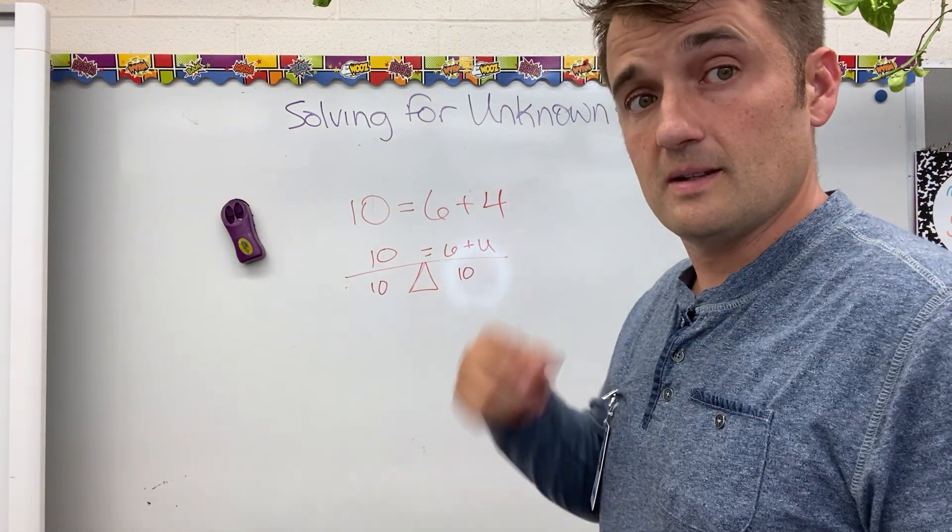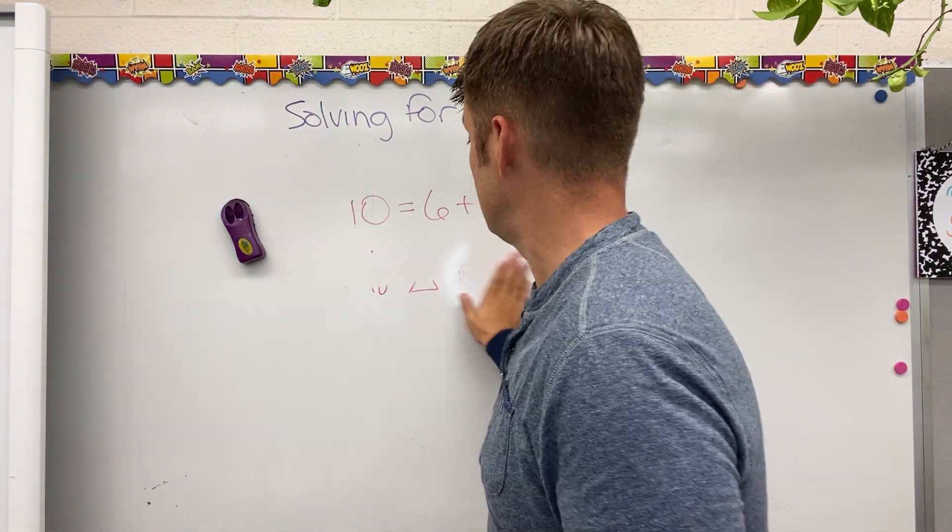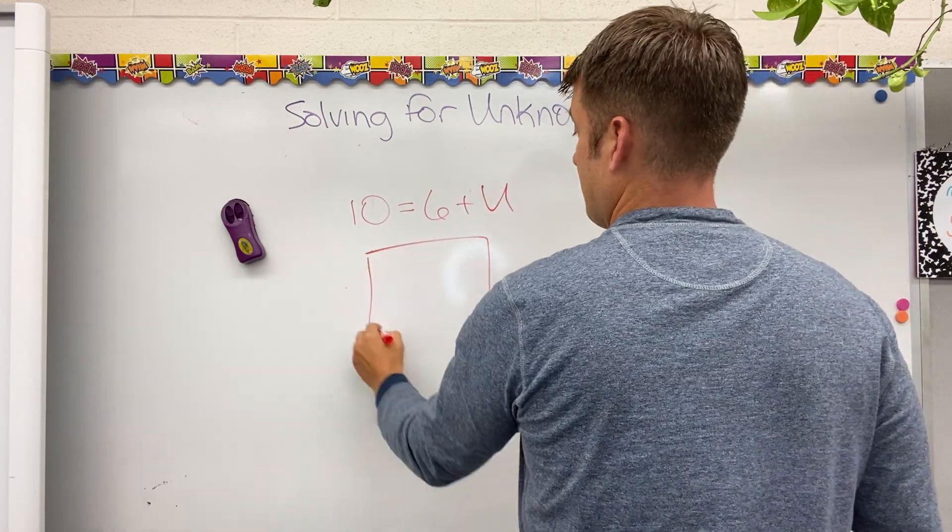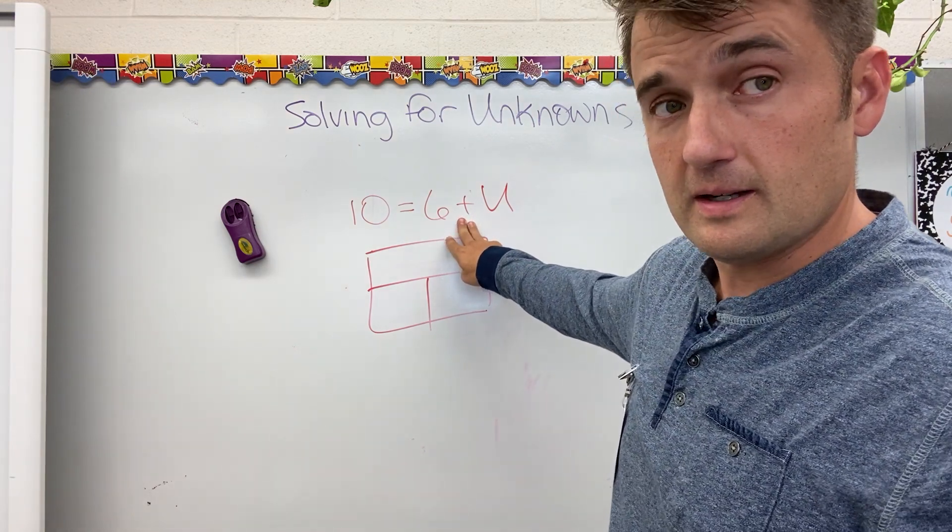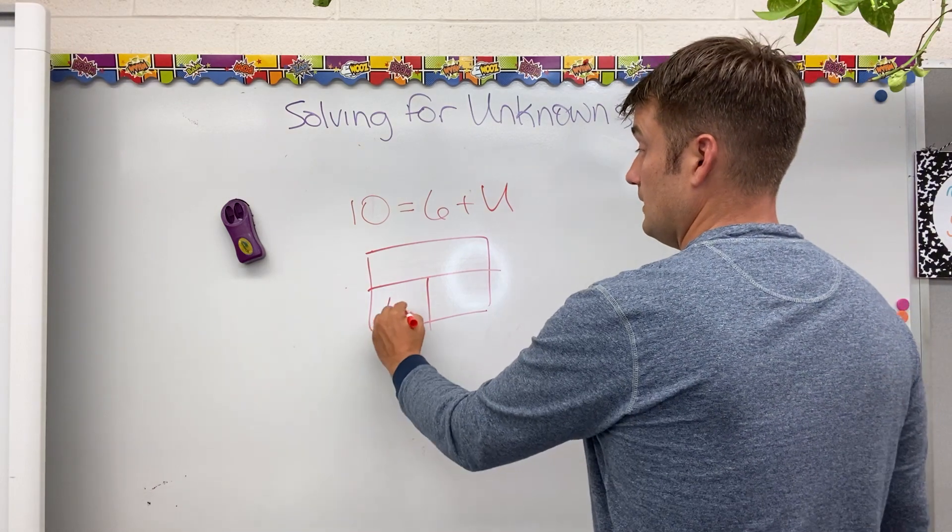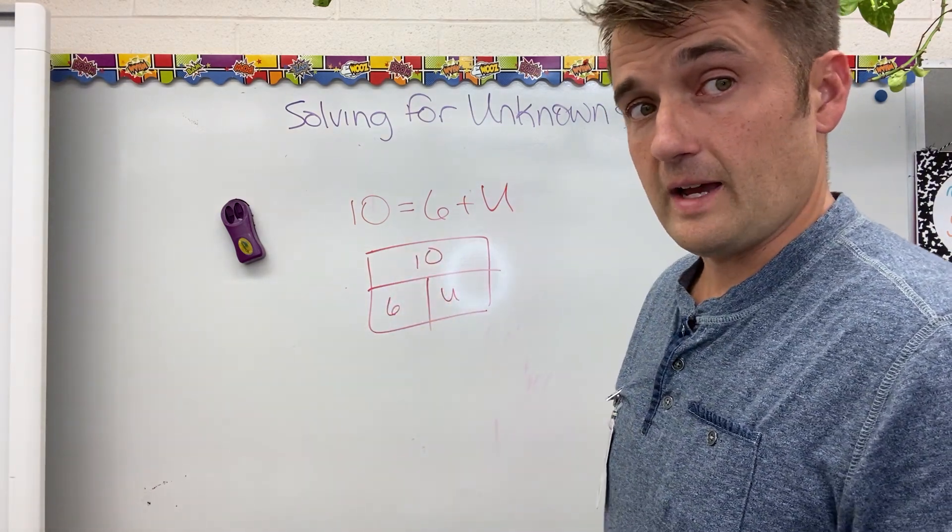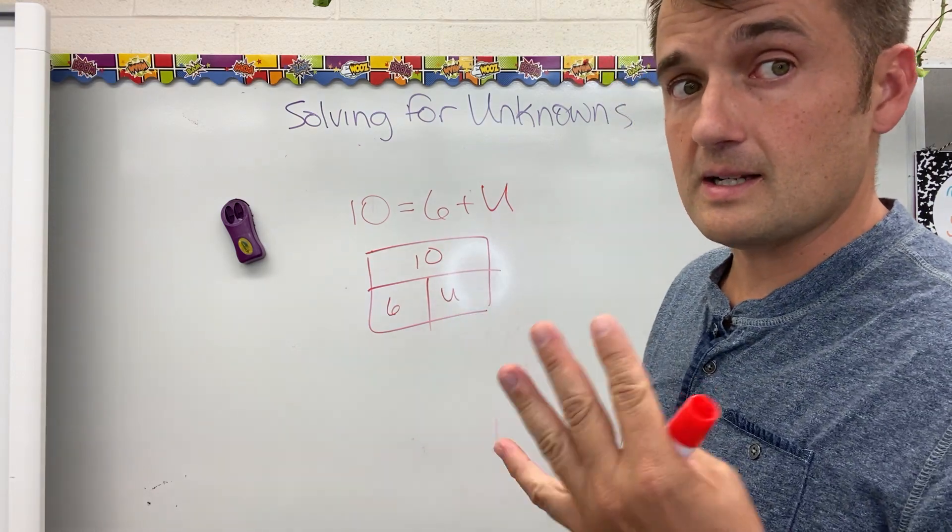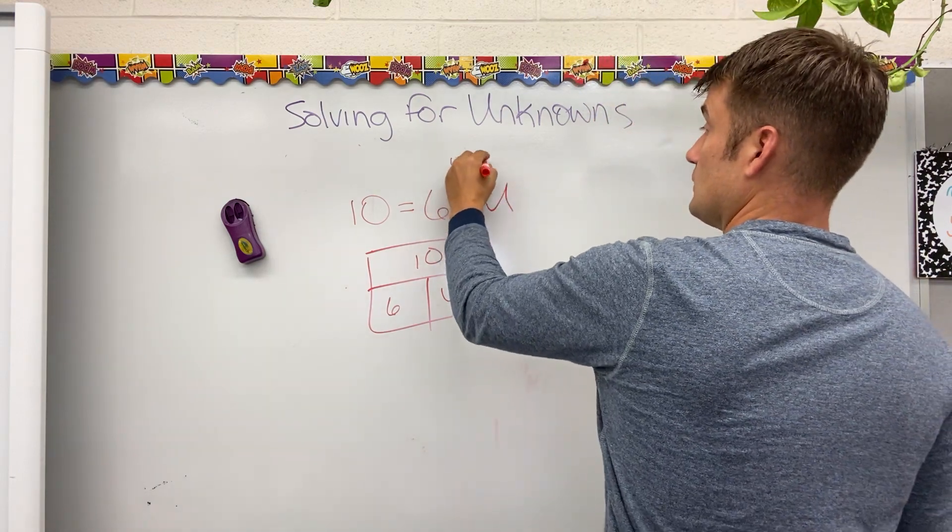And, when I go back and check it, it makes sense. Parts in a whole. I have an addition equation. In addition, you add the parts. These are my parts. 6 and U. My total is 10. If I have 6, what is missing to get me to 10? 7, 8, 9, 10. It's still 4. U equals 4.